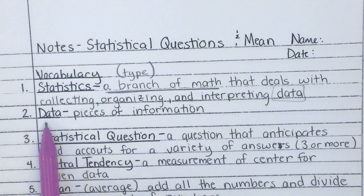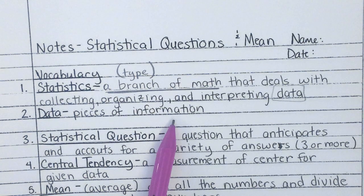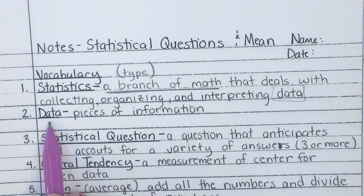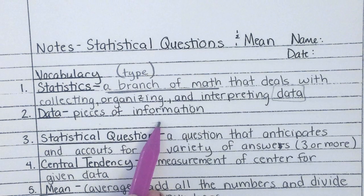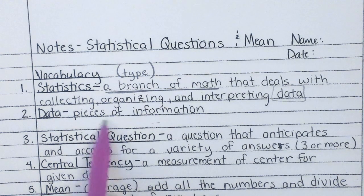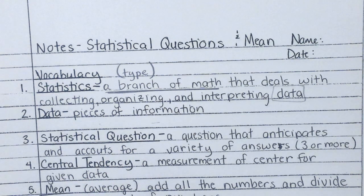Data itself is pieces of information — that's it. A lot of people think of statistics as dealing with science because in a science experiment you're collecting data, pieces of information from that experiment. You also see a lot of statistics in the banking and financial world because finances has a lot of data, lots of pieces of information, lots of numbers you can work with.